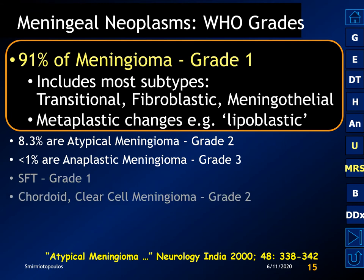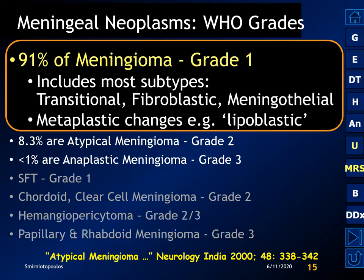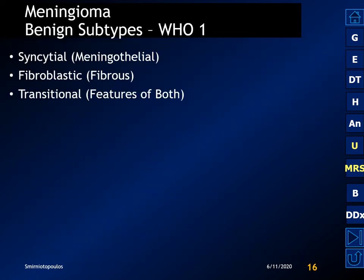Solitary fibrous tumors are grade 1. Chordoid and clear cell meningiomas are grade 2. Hemangiopericytomas may be grade 2 or grade 3. Papillary and rhabdoid meningiomas are also grade 3 neoplasms.